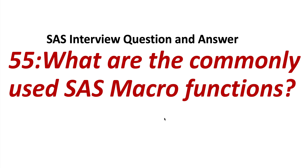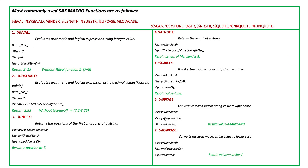SAS interview question and answer, question number 55: what are the commonly used SAS macro functions? The most commonly used SAS macro functions are: %EVAL, %SYSEVALF, %INDEX, %LENGTH, %SUBSTR, %UPCASE, %LOWCASE, %SCAN, %SYSFUNC, %STR, %NRSTR, %QUOTE, %NRQUOTE, and %UNQUOTE. In this video, the first seven SAS macro functions are going to be explained, and the remaining seven will be explained in the next video.